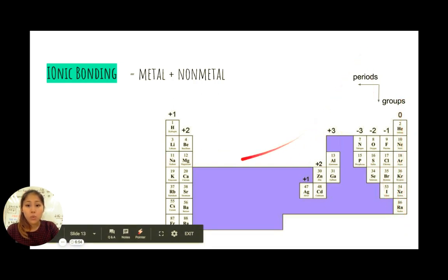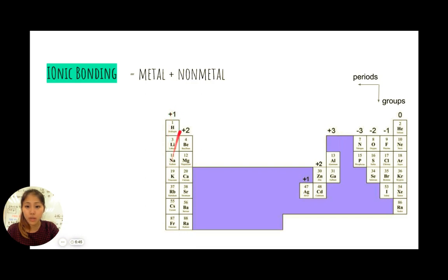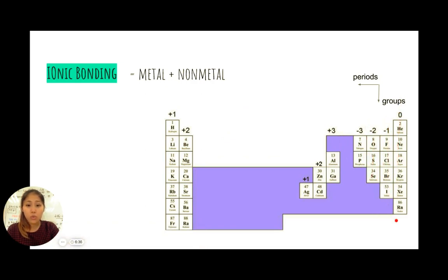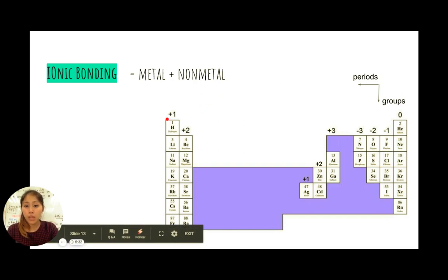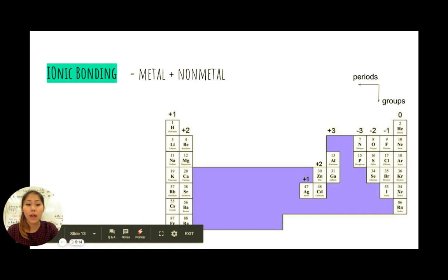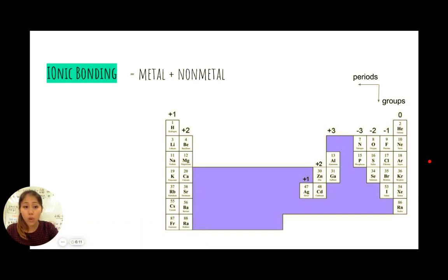When we take out the transition metal section, the groups are numbered: group 1, group 2, group 3, group 4, group 5, 6, 7, and 8. Group 1 has one valence electron — valence means the outer shell. Group 2 has 2 electrons in its outer shell, group 3 has 3, group 4 has 4, group 5 has 5, and so on. Once you reach 8 electrons in your outer shell, you have a full outer shell.